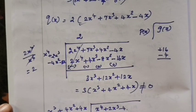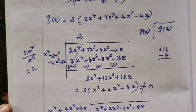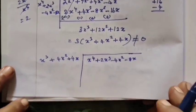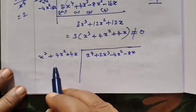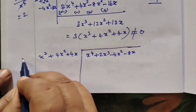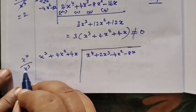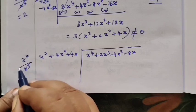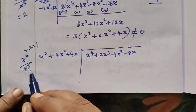2x³. So if we divide this polynomial, the sum is over. x power is 4, x cube. So if we cancel this, 4 minus 3 equals 1.